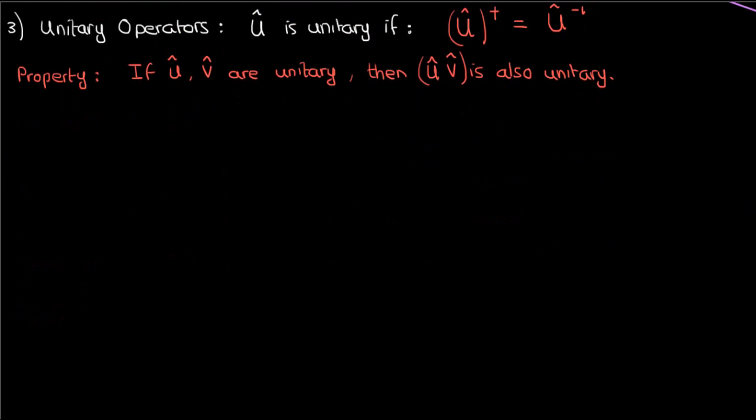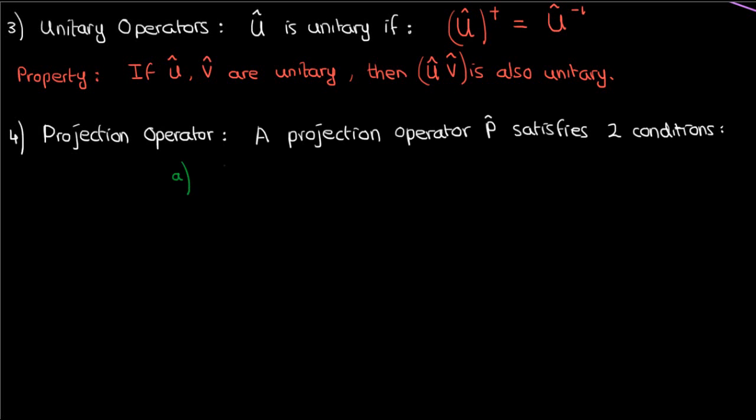The last operator I'm going to cover in this video is called a projection operator. A projection operator P hat satisfies two conditions. The first condition is that it's Hermitian, and the second condition is that it's equal to its own square.